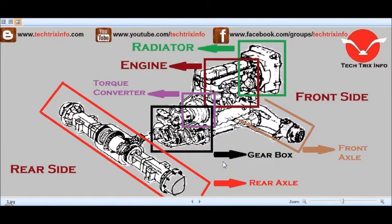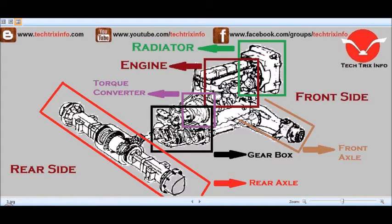Let's identify the automobile components — the powertrain — which includes the radiator. This is the radiator at the front part of the machine, part of the automobile system. Then comes the engine, and we have the front axle here.